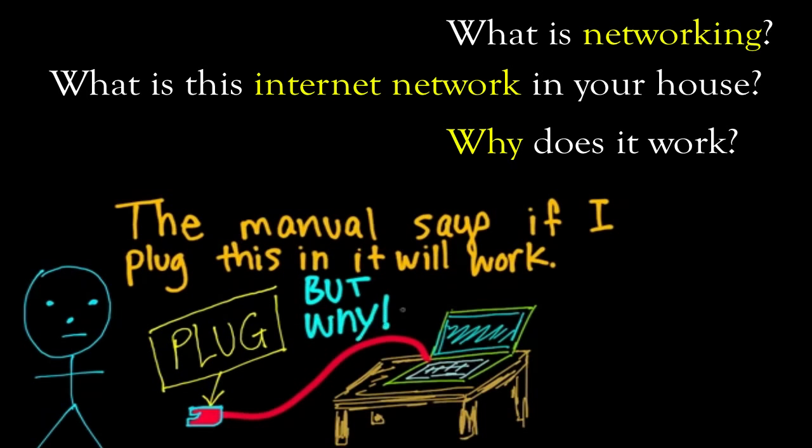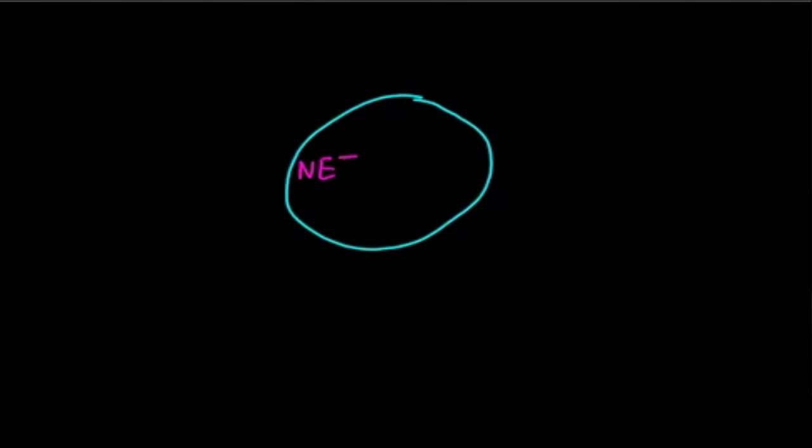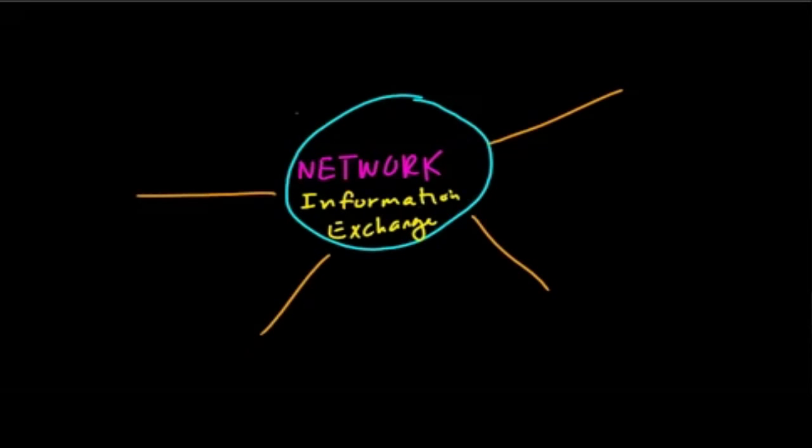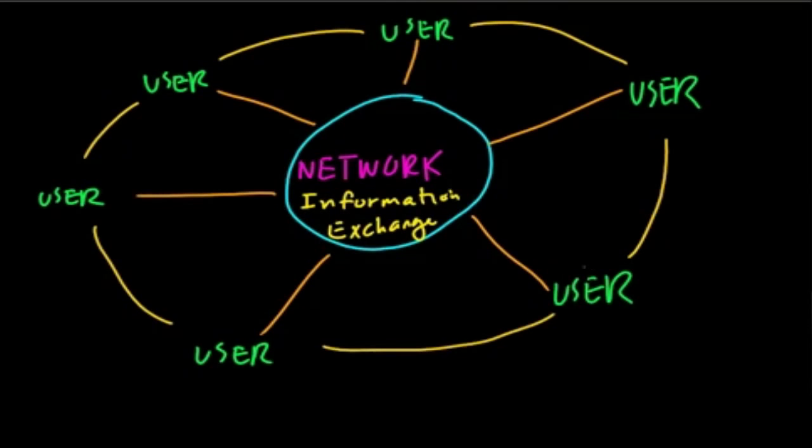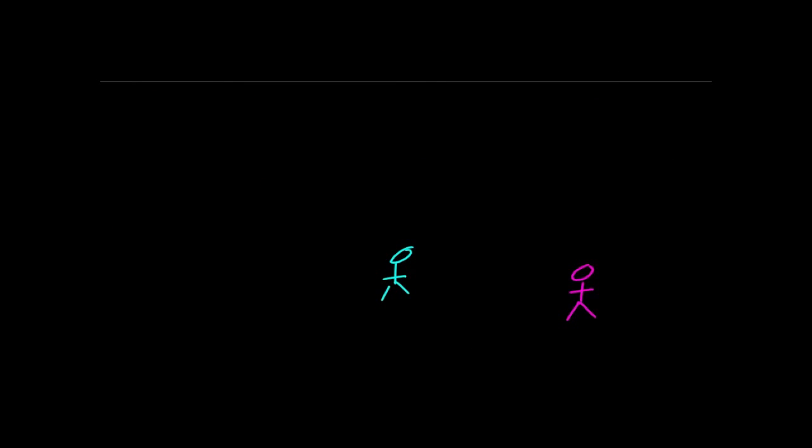So why don't you tell us, what is a network? So networking is information exchange. It's the exchange of information between different users of that information. I think earlier you were mentioning something about social networks. A social network is an example of a network. It's right in the name. A social network is a group of people and their information is flowing back and forth between them.